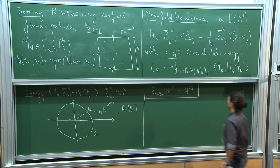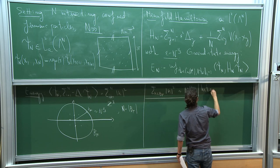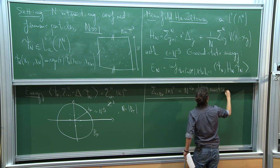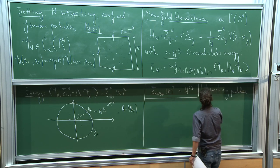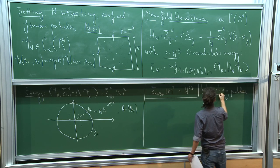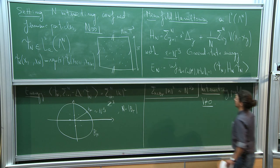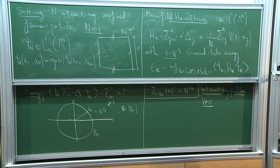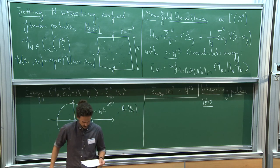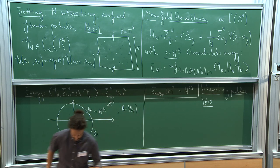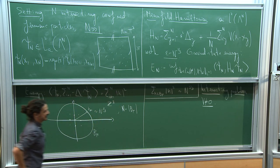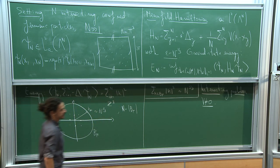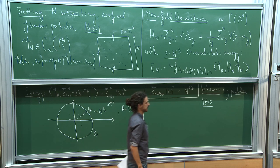Now moving to the interacting problem with V nonzero. This is much more difficult because in general the ground state will not be uncorrelated — you need to take correlations among the particles into account. Even in the mean field regime, computing the ground state energy is a difficult task.